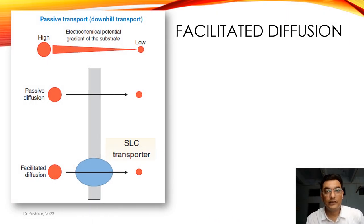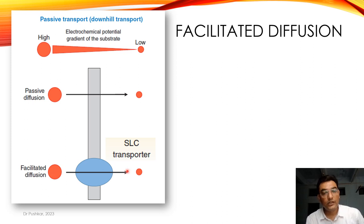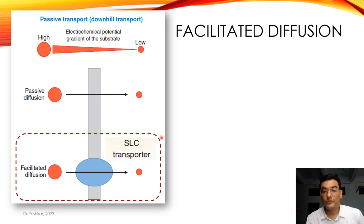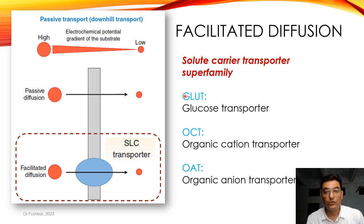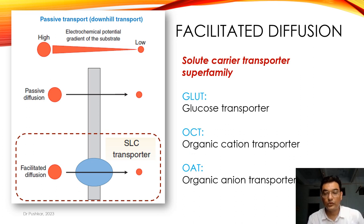Facilitated diffusion moves from high to lower concentration with the help of carrier proteins. One very important example is the SLC transporter — the solute carrier transporter superfamily. Important examples include GLUT (glucose transporter), organic cation transporters, and organic anion transporters.